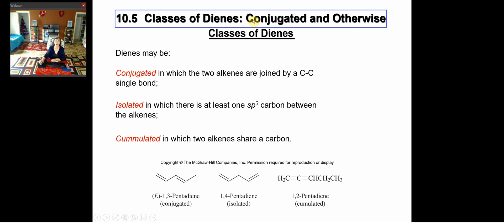Regarding dienes, we can classify them into different groups. A diene contains two carbon-carbon double bonds. You can classify dienes into conjugated dienes, isolated dienes, and cumulated dienes. Conjugated dienes, such as E-1,3-pentadiene, have two alkenes joined by a carbon-carbon single bond — double bond, single bond, double bond alternatively occurring.